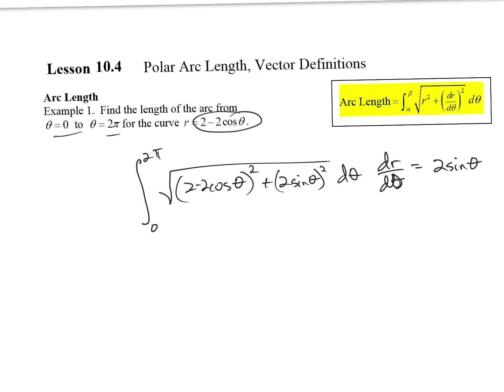These polar arc length problems are usually just done in the calculator. So grab your calculator, put it in, give me three decimal places. What did you get? 16. Is it 16 even? Yes. No decimals — if it actually ends at 16 then you don't need three decimal places. If I had something like 16.0001 going on, I'd show the rounding. But if it goes to 16 exactly, you can just put 16.